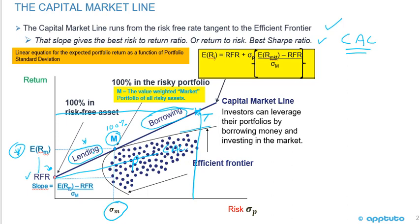The slope of the line is the expected return of the market portfolio minus the risk-free rate, divided by the standard deviation of the market portfolio. Therefore, my expected return anywhere along this line would be the risk-free rate plus the standard deviation of that portfolio times the slope of that line — which is the expected return of the market minus the risk-free rate divided by the standard deviation of the market.